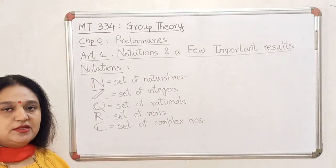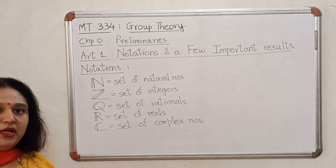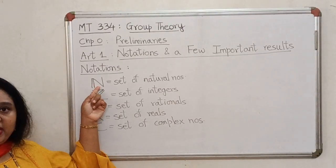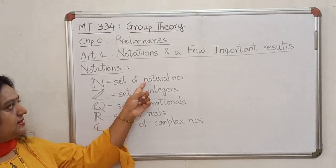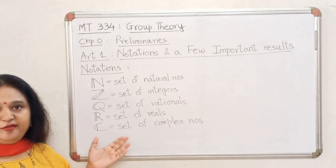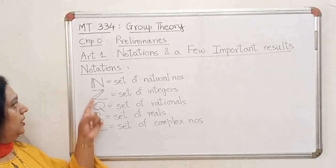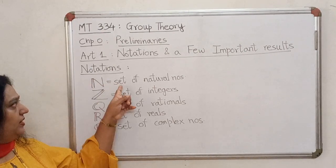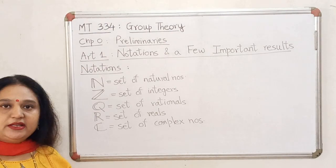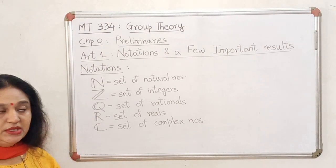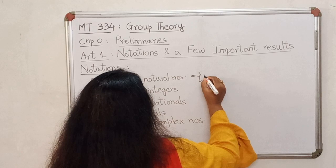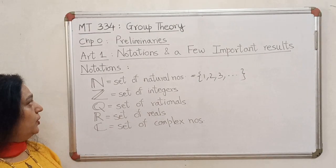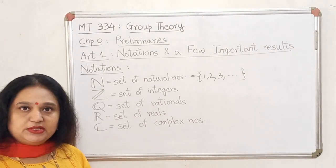In mathematics for these sets of numbers we use what are called script letters. So we begin with script N which will stand for set of natural numbers. It's not a very difficult symbol to master. You use a capital N with a parallel extra line over here. So that will denote the set of natural numbers. The natural numbers are your counting numbers. So here we have numbers like 1, 2, 3 and so on. N stands for the set of natural numbers or the counting numbers.